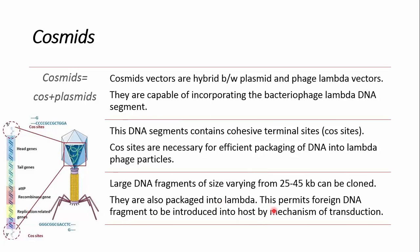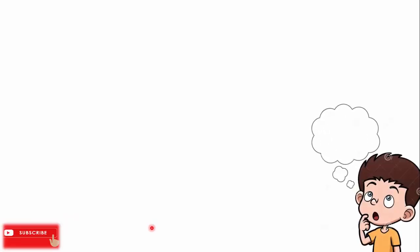If these cos sites are 50 kb away from each other, then the DNA could be efficiently packaged inside the phage head. But if the distance between these cos sites is less than 50 kb or less than 30 kb, then packaging will not take place. So let's see what are the features of the cosmid vector.